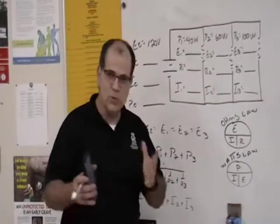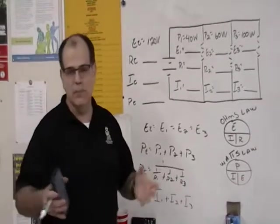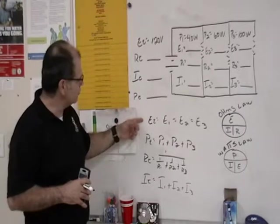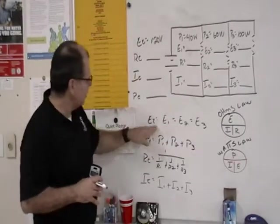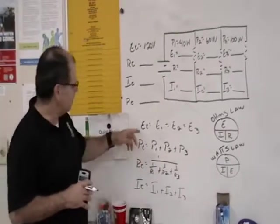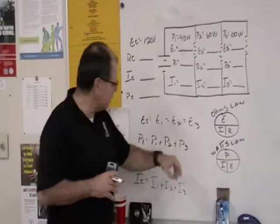So before we do that, first thing we have to understand is what the rules for parallel circuits are. First rule, as far as the voltage is concerned, in a parallel circuit, voltage stays the same across all of the components. That's why ET is equal to E1, is equal to E2, is equal to E3.